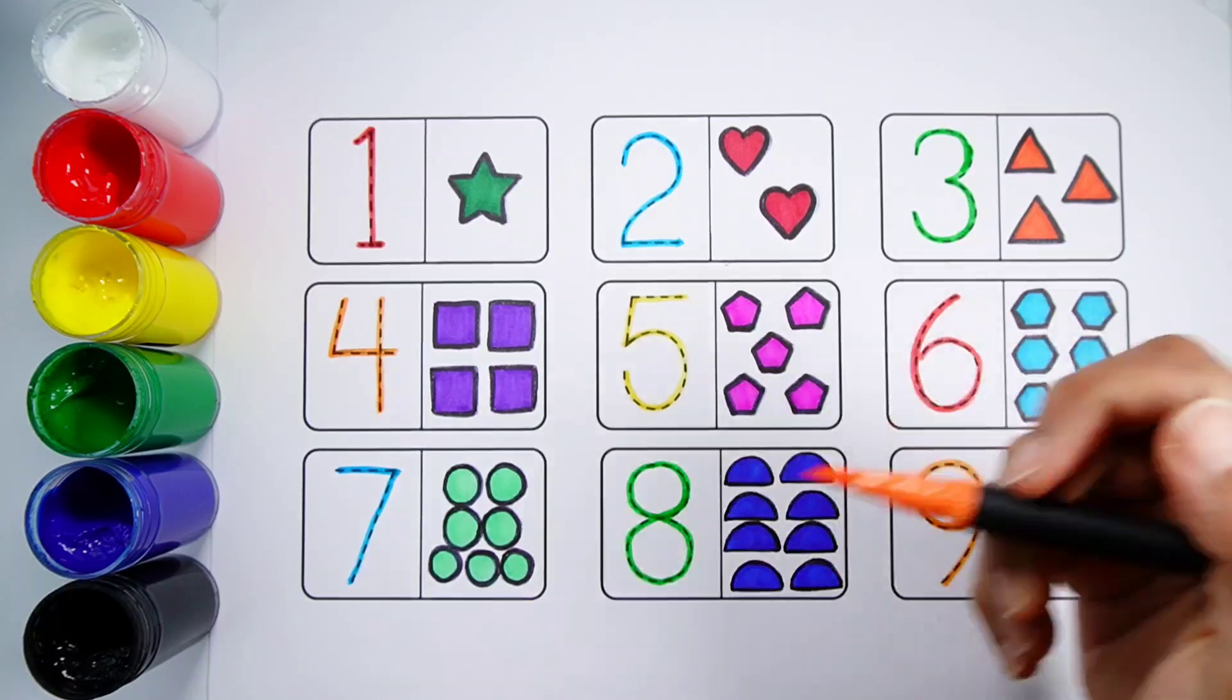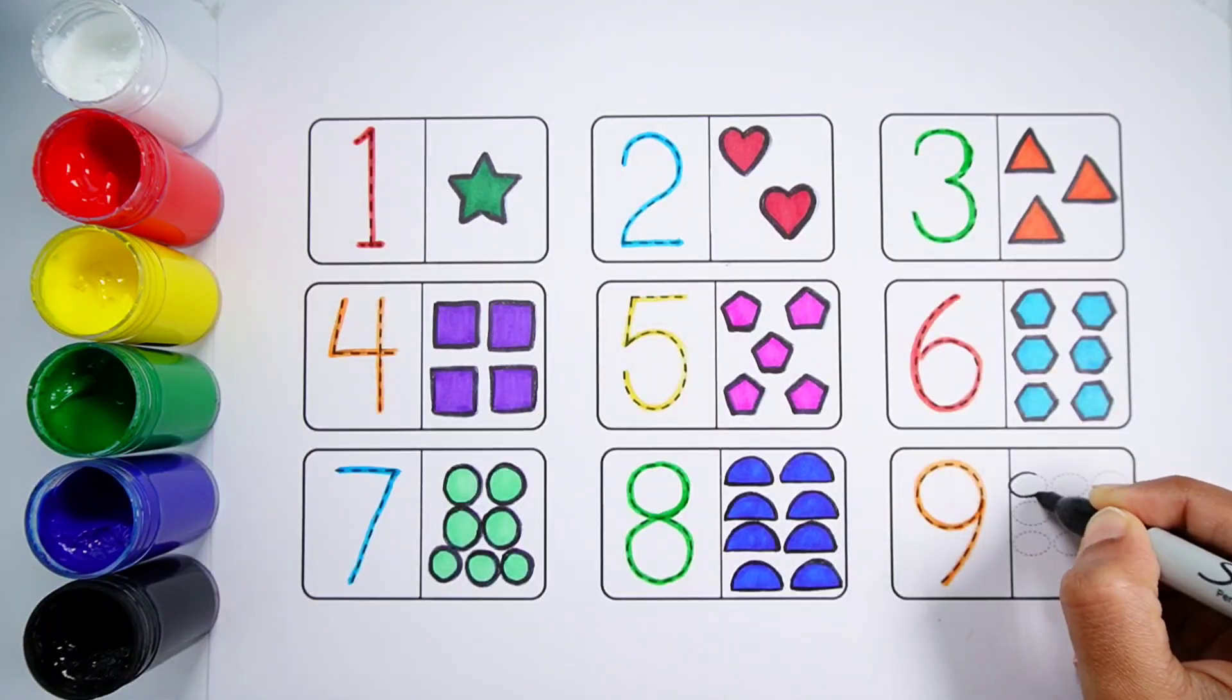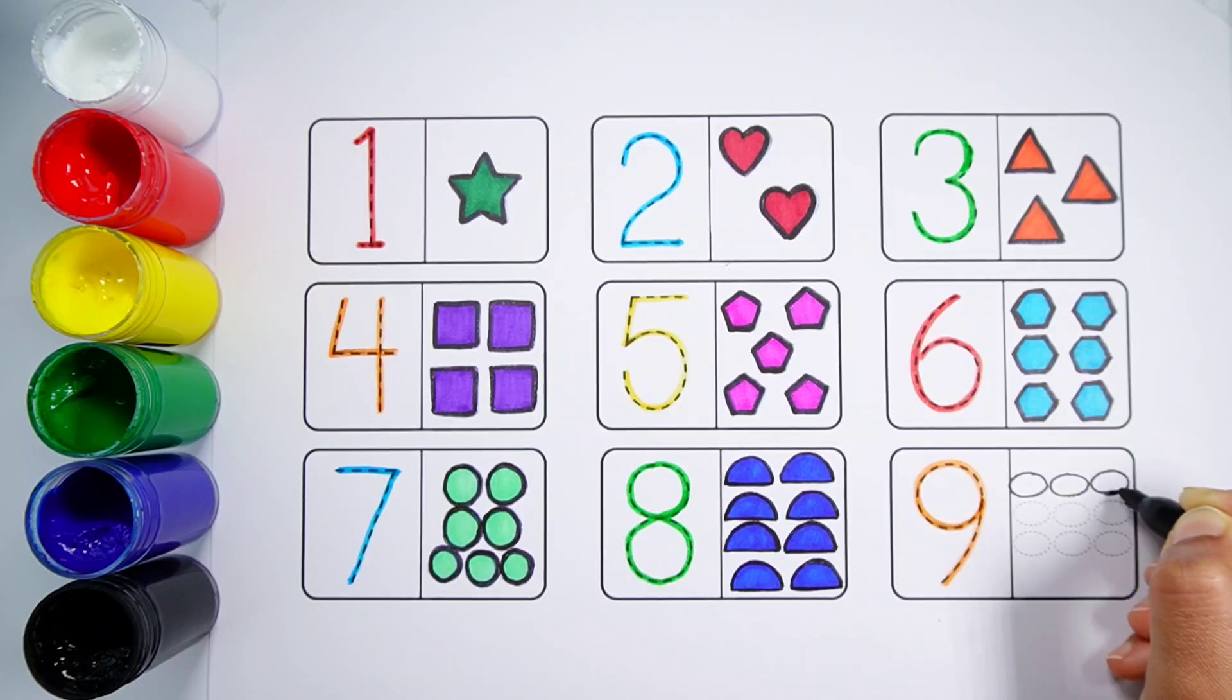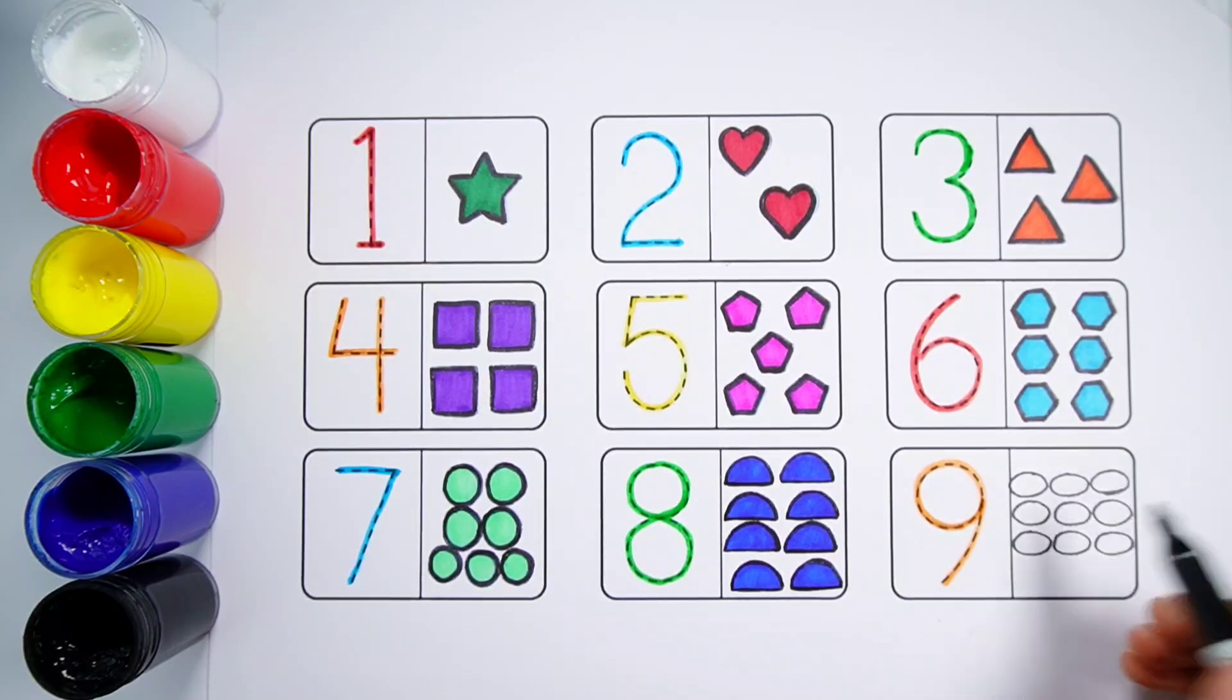Number 9. One, Two, Three, Four, Five, Six, Seven, Eight, Nine. Nine Ovals.